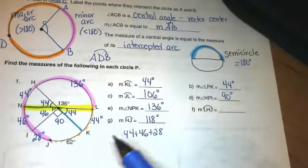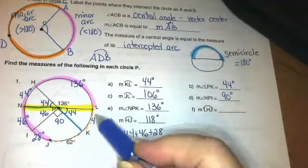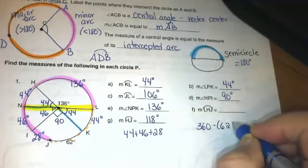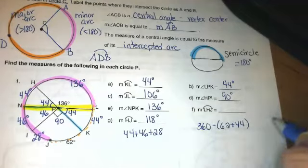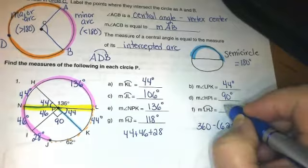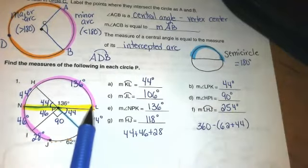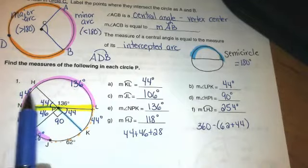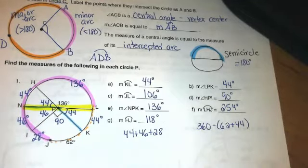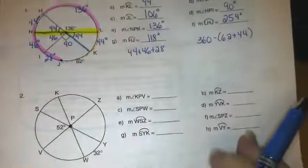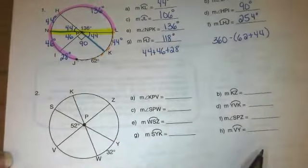So there's a couple of different ways I can find this. I can add up all the arcs that take me from L through H to J, or I could take the two that they didn't ask and subtract it from 360. So I think I'm going to do that. I'm going to add 44 to 62 and then subtract that from 360 and get 254. The other way is of course just add up everything I just highlighted in pink: 136 plus 44 plus 46 plus 28. And there we go.